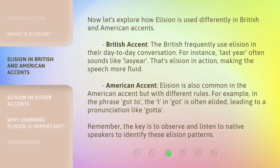American Accent: Elision is also common in the American accent but with different rules. For example, in the phrase 'got to', the T in 'got' is often elided, leading to a pronunciation like 'gotta'. Remember, the key is to observe and listen to native speakers to identify these elision patterns.